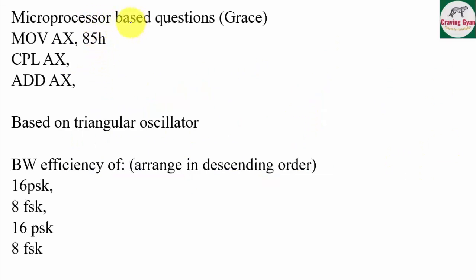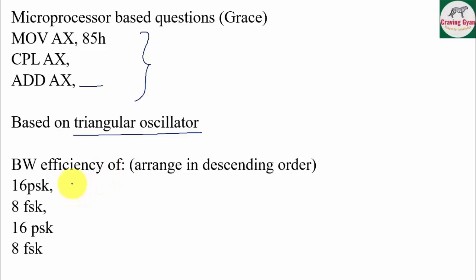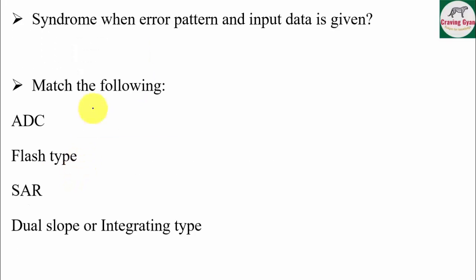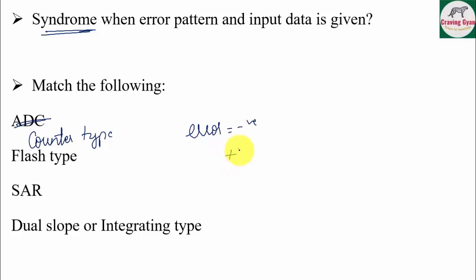They asked one question based on microprocessors — something like ADD AX — which will be a straightforward question. They also asked about triangular oscillator, bandwidth efficiency in decreasing order for 16-PSK and 8-FSK, syndrome-based questions, and match-the-following. In the case of counter-type ADC, error is negative, whereas in other types, error is positive.